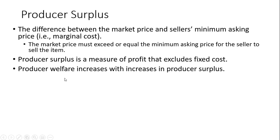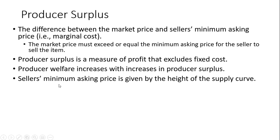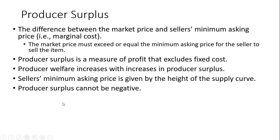Producer welfare increases with increases in producer surplus. The seller's minimum asking price is given by the height of the supply curve — the vertical height of the supply curve at any given quantity represents the minimum asking price per unit. Producer surplus cannot be negative.